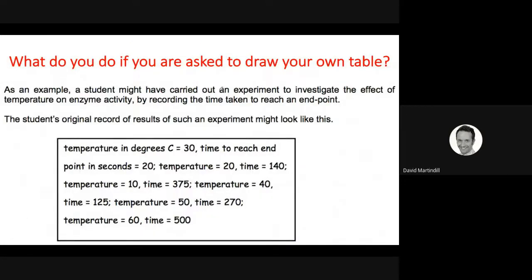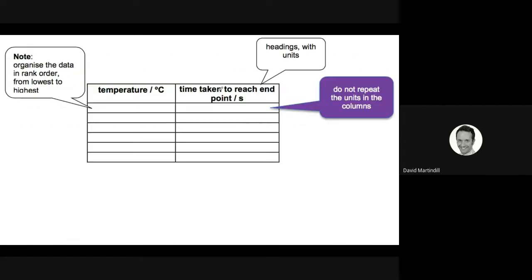What happens if you're asked to draw your own table? Well, you might be given some data like this. What you have to do is usually draw two columns. The left-hand column, as you can see, contains the independent variable. This is the variable that was changed in the experiment. The right-hand column contains the dependent variable, which is the factor that was measured.